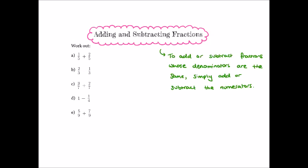Hopefully you've had enough time to work through those questions. To add or subtract fractions when the denominators are the same, we simply add or subtract the numerators. For question a, we have one fifth plus two fifths. The denominator is five in both cases, so we add the numerators: one plus two is three, so one fifth plus two fifths is three fifths.